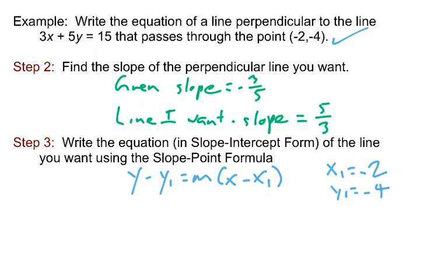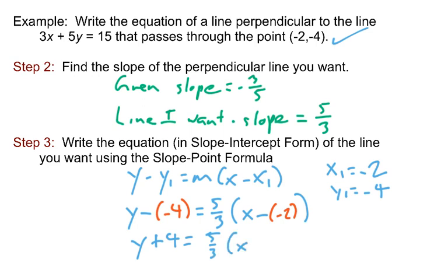So plugging things in, this would look like this: y minus, now y₁ is negative, so y minus negative 4 equals, and the m we want to use is 5/3, x minus, and then x₁ is negative 2. Let's simplify that just a little bit by thinking about how subtracting a negative is the same as adding a positive. So then we have y plus 4 equals 5/3 times (x + 2).